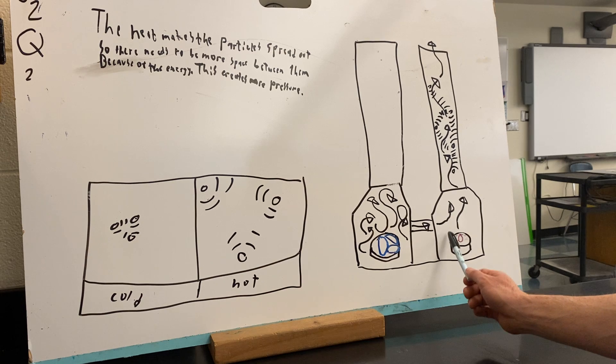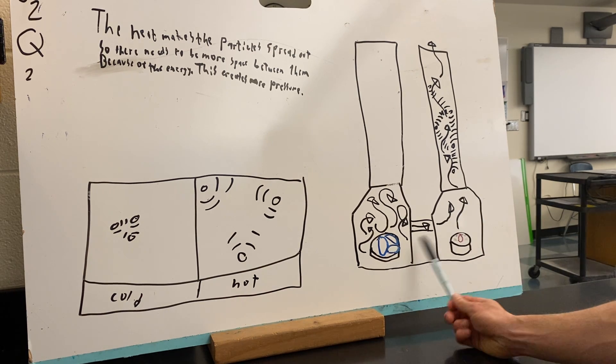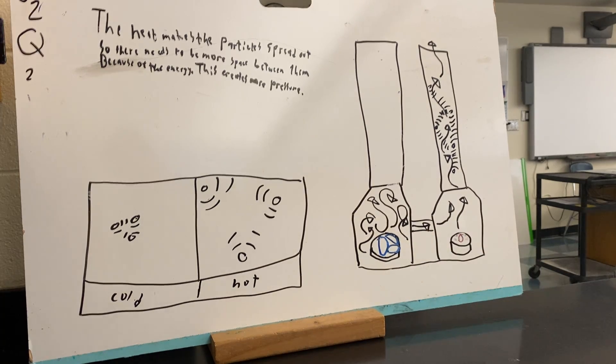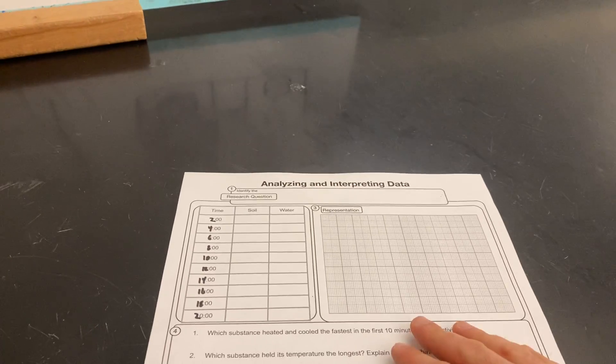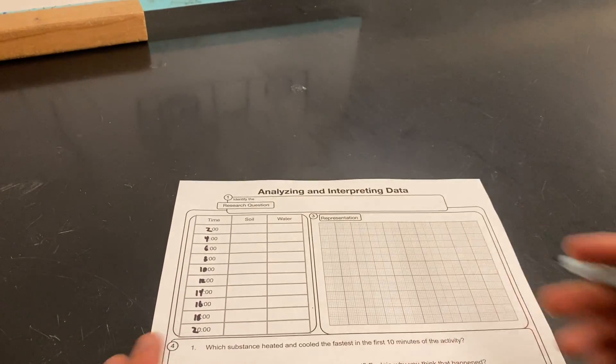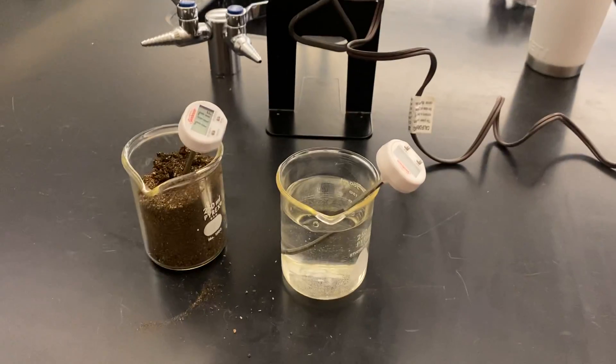The question today is do things heat and cool at the same rate? Would this also affect our extreme weather patterns and how wind forms? So for our worksheet today, we have two different surfaces: we have land, we have water.